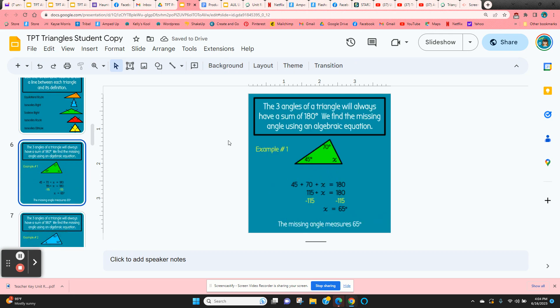Now it explains that the three angles of a triangle will always add up to 180 degrees. So how do we find a missing angle? We use algebra. It shows them how to do this. You add the three angles: 45 plus 70 plus x, we know it's going to equal 180 degrees. Combine like terms, subtract, and then we have the missing angle measurement.